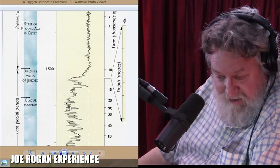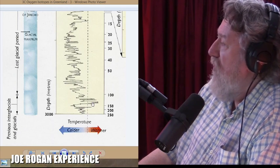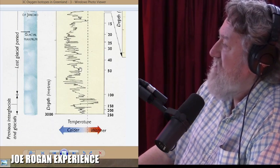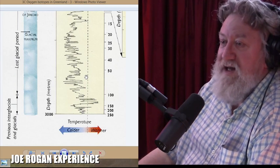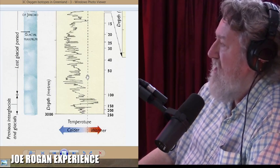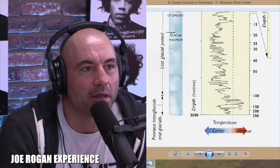And when we look at some of this, right there, that is a major global warming right there. Because this dashed line represents the modern temperature. Like the 20th century average is this dashed line. That dashed line, what year are we looking at right there?